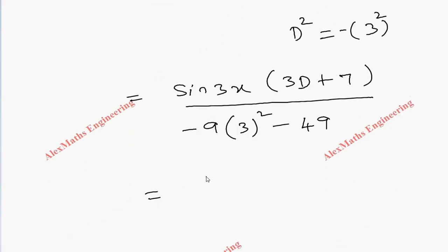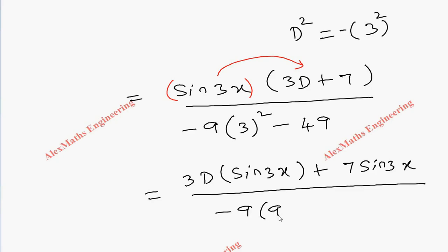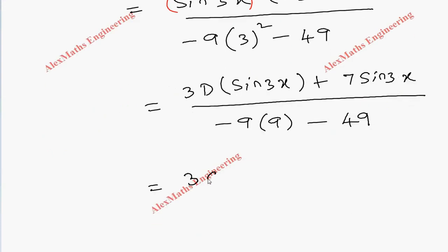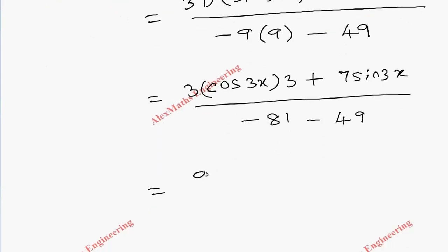The entire numerator: we multiply this outside term with both terms. It is 3D(sin 3x) + 7sin(3x), whole divided by -9 × 9 - 49. D stands for differentiation, so 3 × cos(3x) × 3 + 7sin(3x), and this is -81 - 49. The numerator is 9cos(3x) + 7sin(3x) divided by -130.